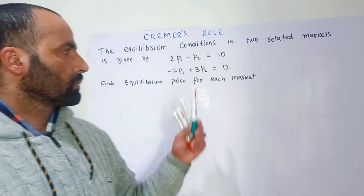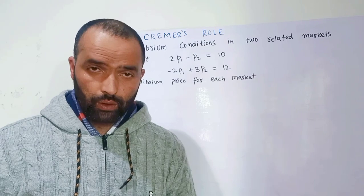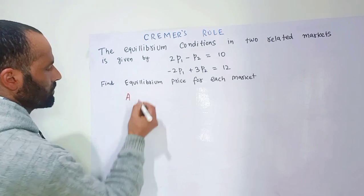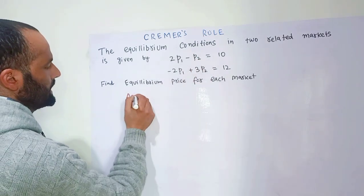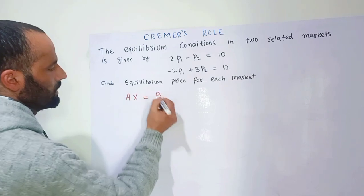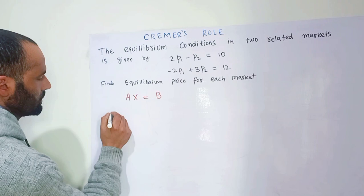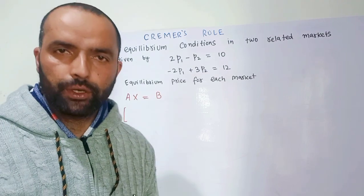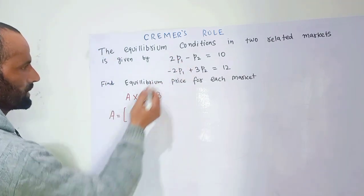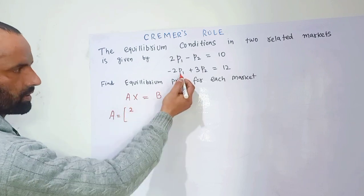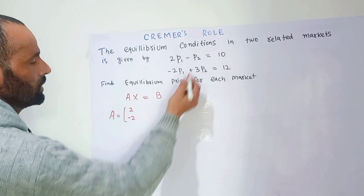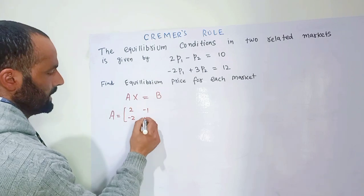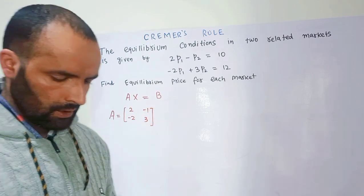We have to find the equilibrium price in each market using Cramer's Rule. First, we form the matrix equation Ax = b, where A denotes the coefficient matrix. The coefficient of p1 in the first equation is 2, and in the second equation is minus 2. The coefficient of p2 is minus 1 in the first market and 3 in the second market. This is our coefficient matrix.